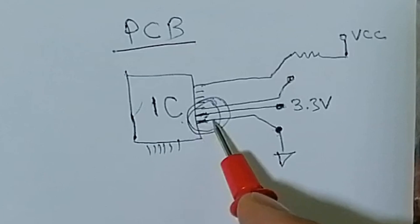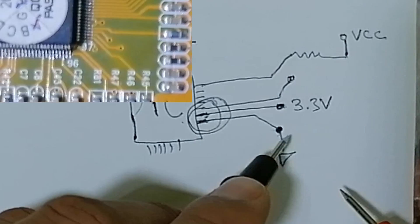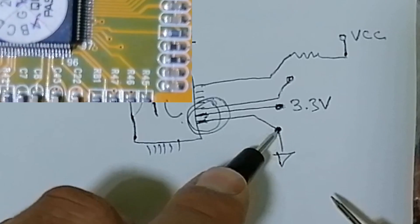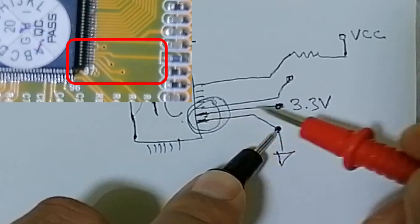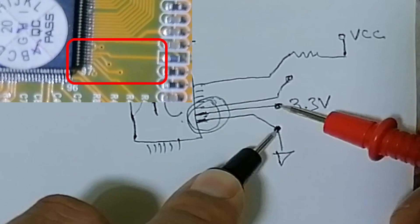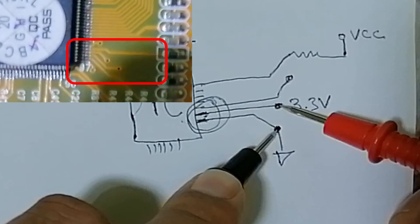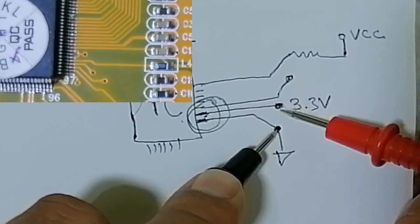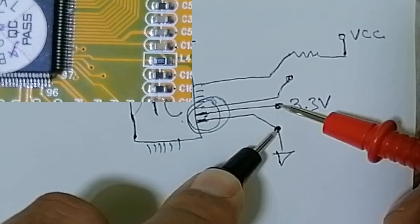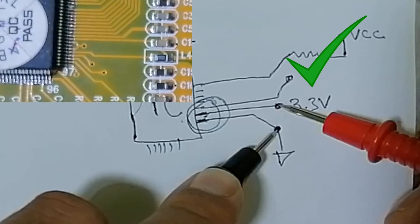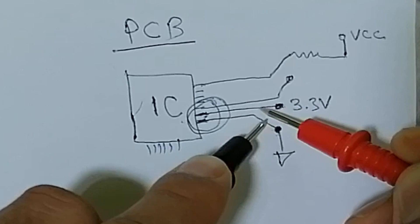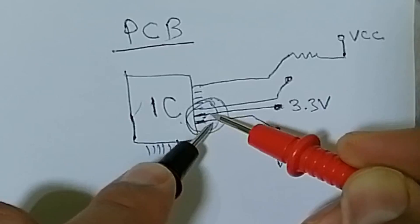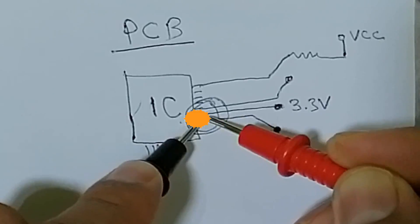Here we have the ground. So I can go here to the ground. This pin is this, and as you can see, here we have some space — we are safe here. But if you go here to test, you can make a short circuit.